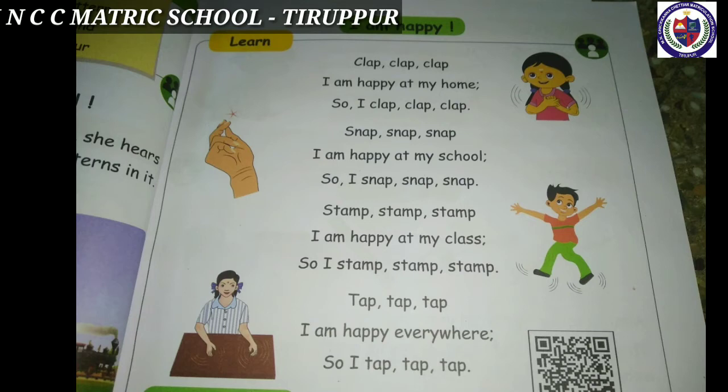I am happy — clap clap clap. I am happy at my home, so I clap clap clap. Snap snap snap — I am happy at my school, so I snap snap snap. Stamp stamp stamp — I am happy at my class, so I stamp stamp stamp. Tap tap tap — I am happy everywhere, so I tap tap tap. Through this song we learn the difference of sounds like clapping, snapping, stamping, and tapping.